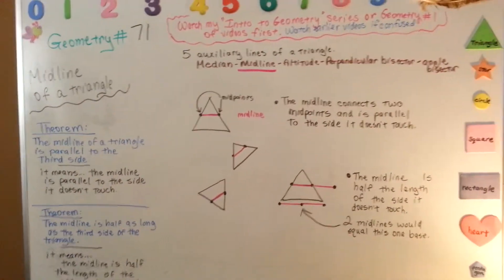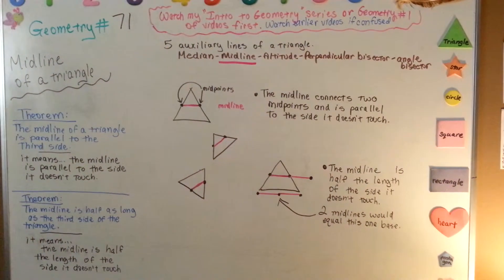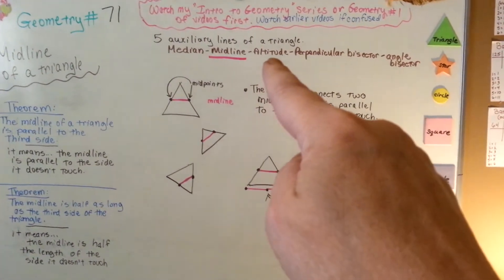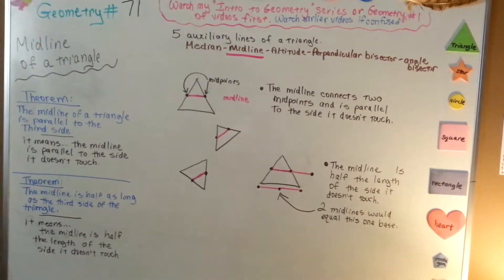So, that's the midline of a triangle. We're going to talk about the altitude of a triangle next, this one, which is actually just the height.